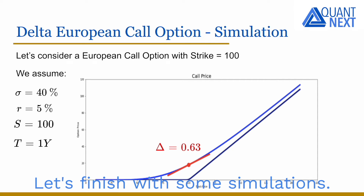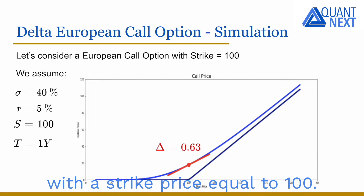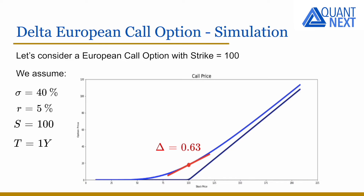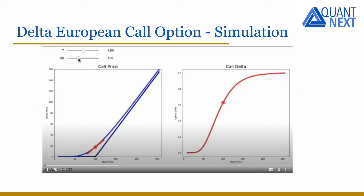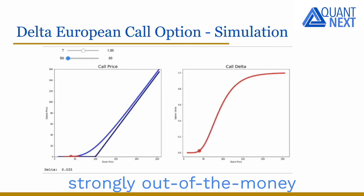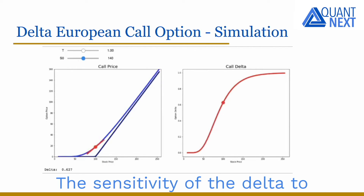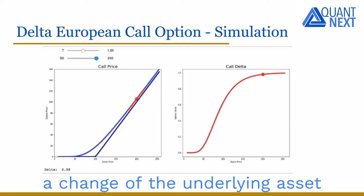Let's finish with some simulations. We consider a European call option with a strike price equal to 100. We see that the delta of a call option goes from 0 when the option is strongly out of the money, to plus 1 when it is deep in the money. The sensitivity of the delta to a change of the underlying asset is measured by the gamma.